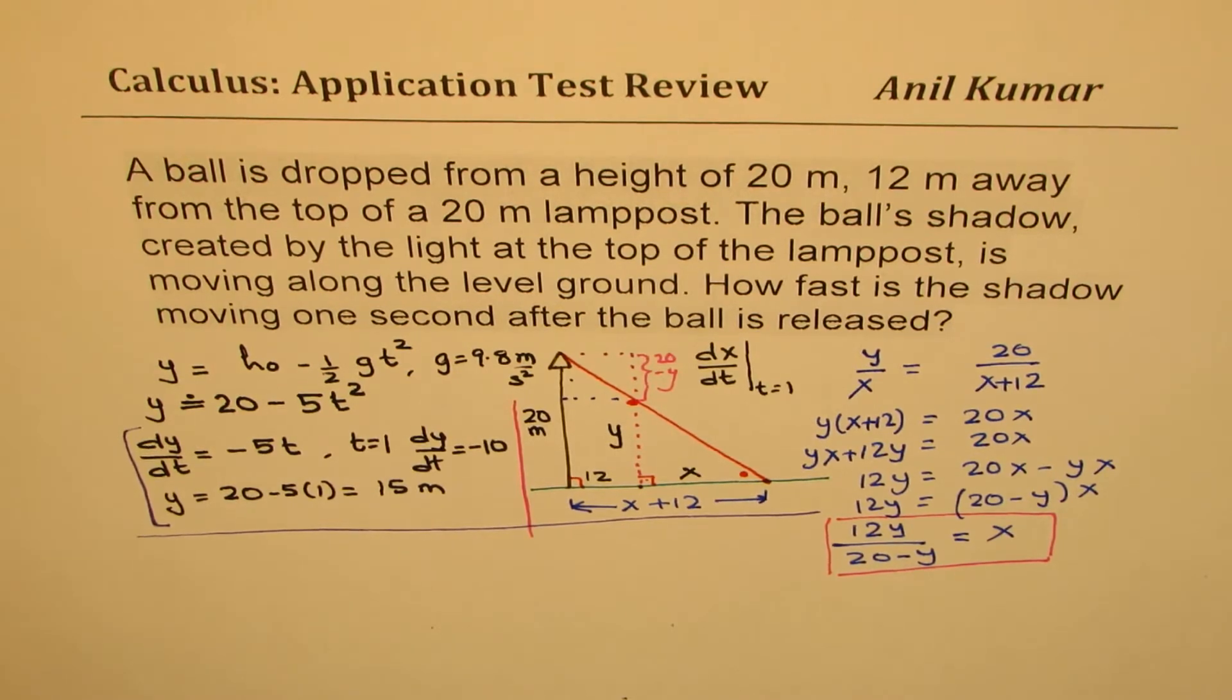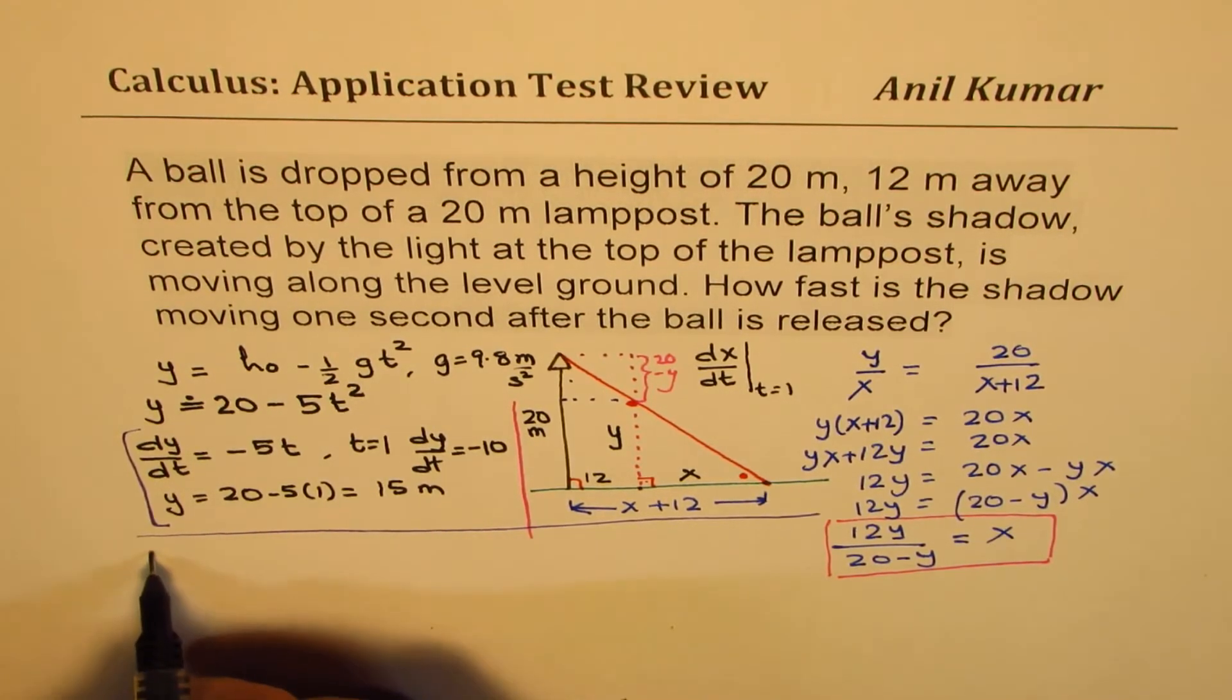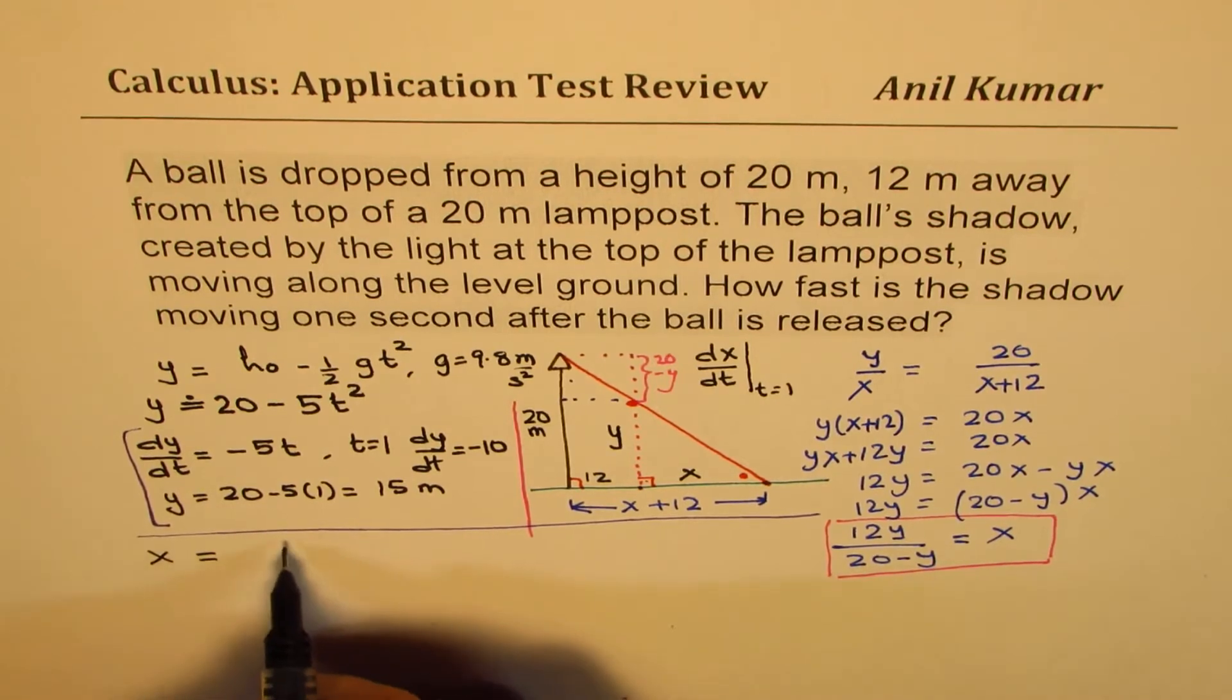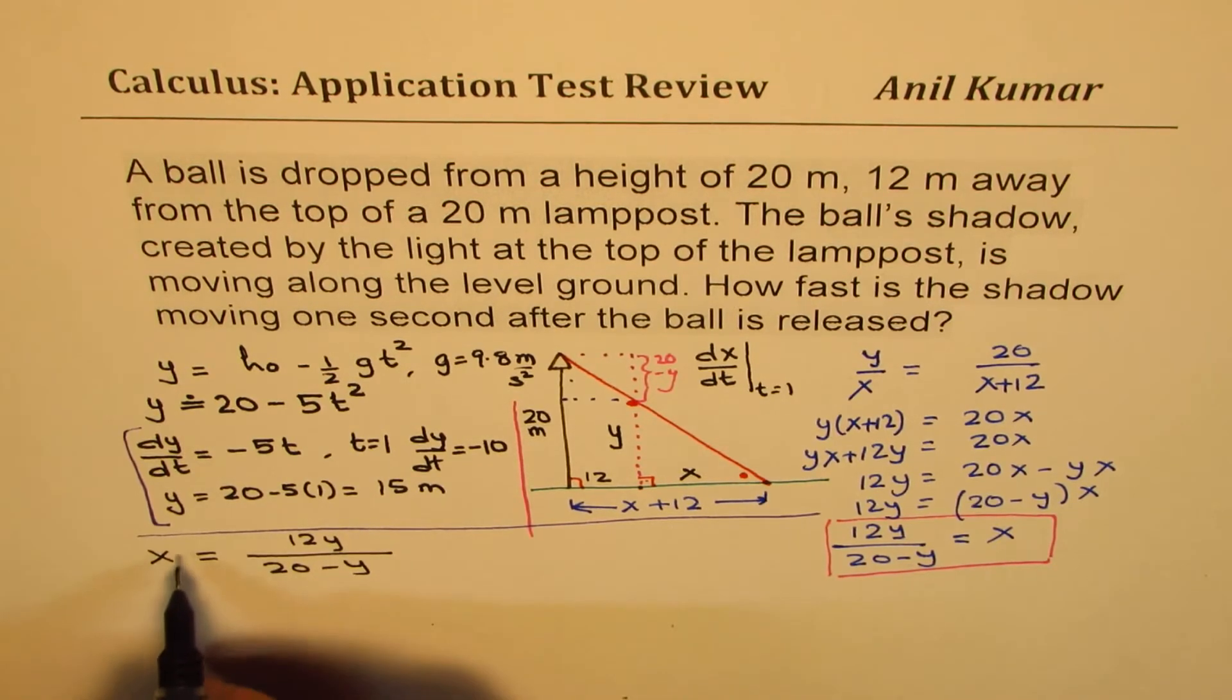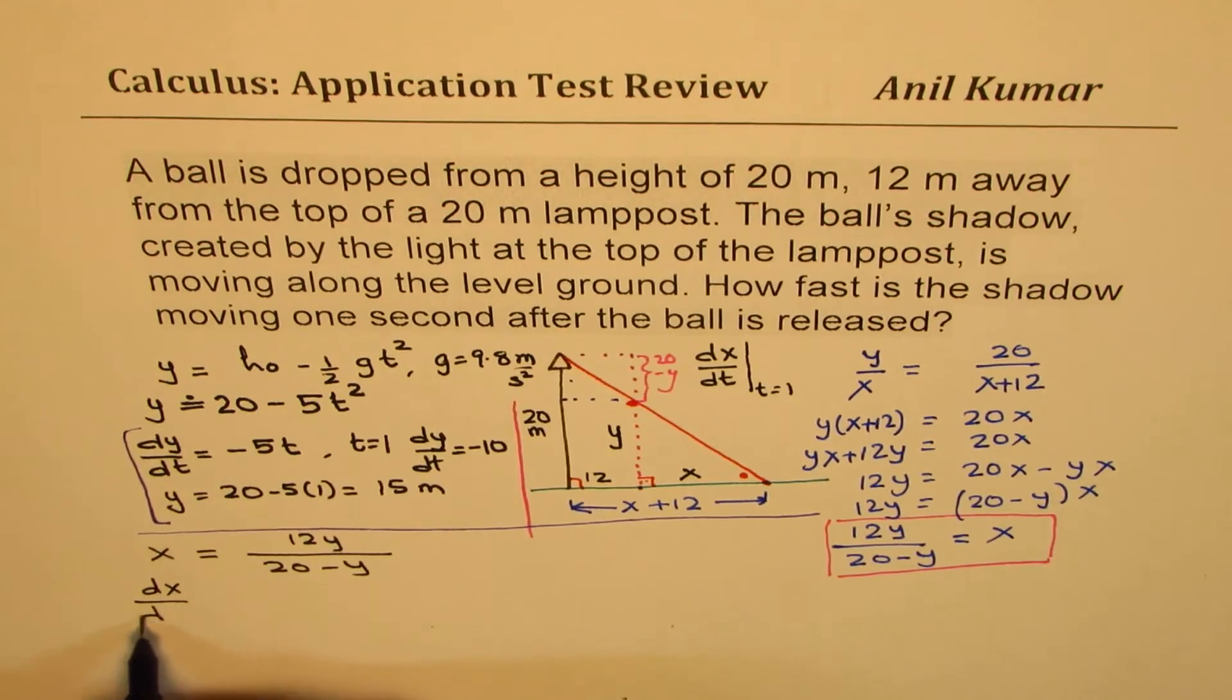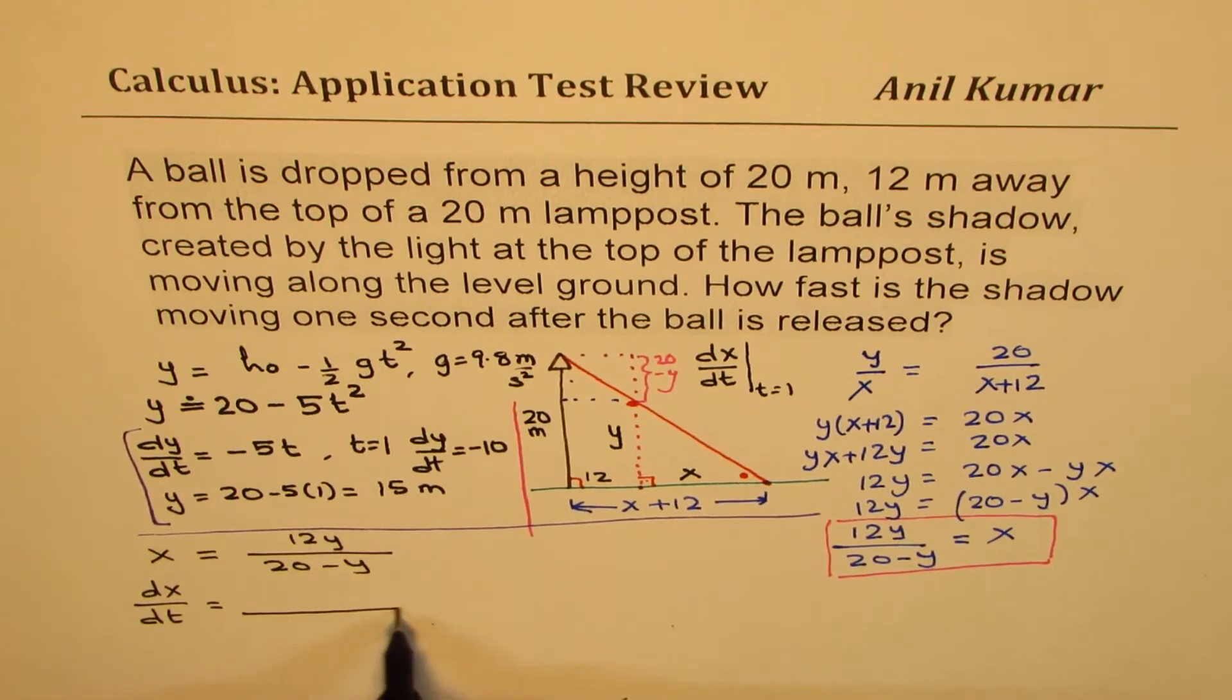Now what? We want to find dx/dt. So I have isolated x. Now it's very simple. I know what x is. x equals 12y over (20 minus y). So dx/dt is equal to... We'll apply the quotient rule now.